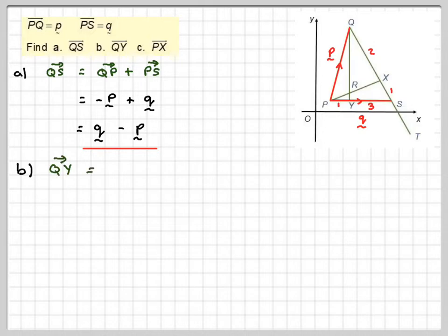B, QY. This line here is like going QP plus PY. So that's going to be going against the arrow of p, so it's minus p, and then one quarter of the way along PS.